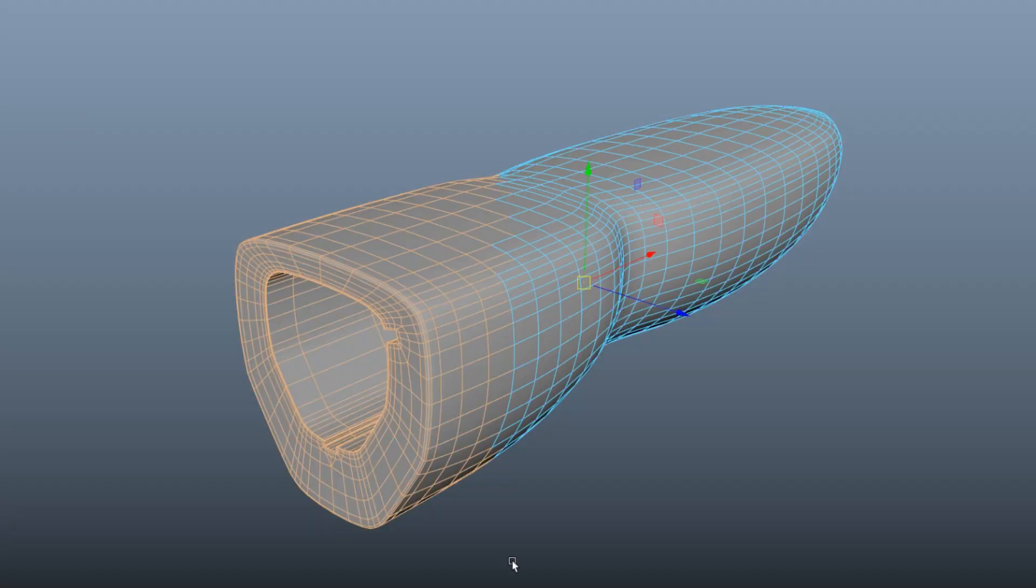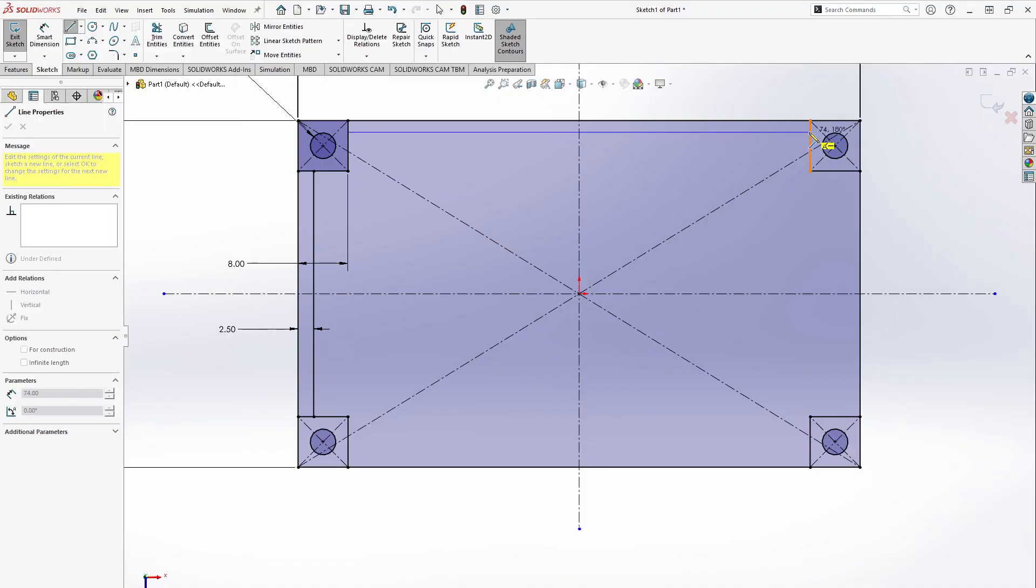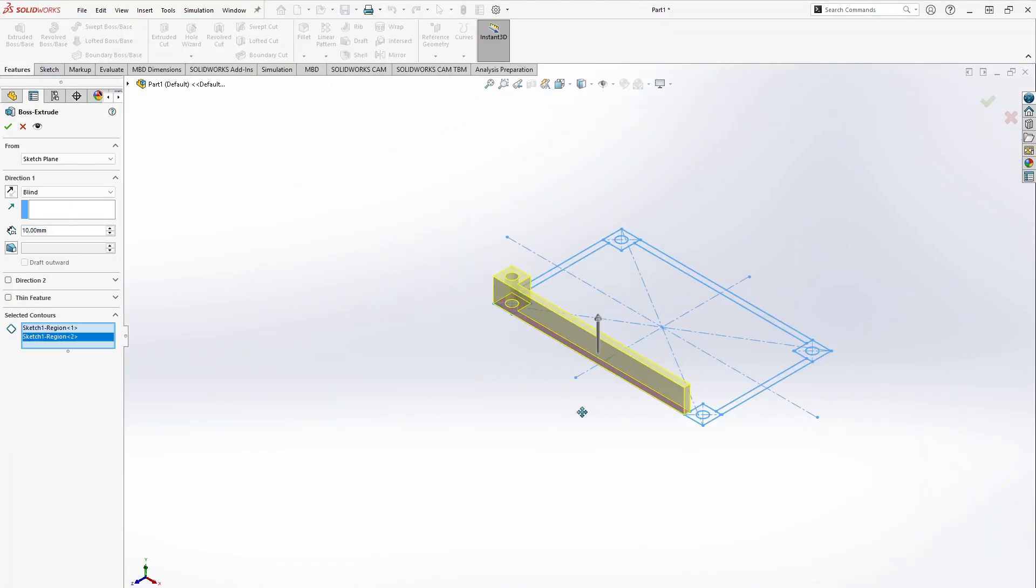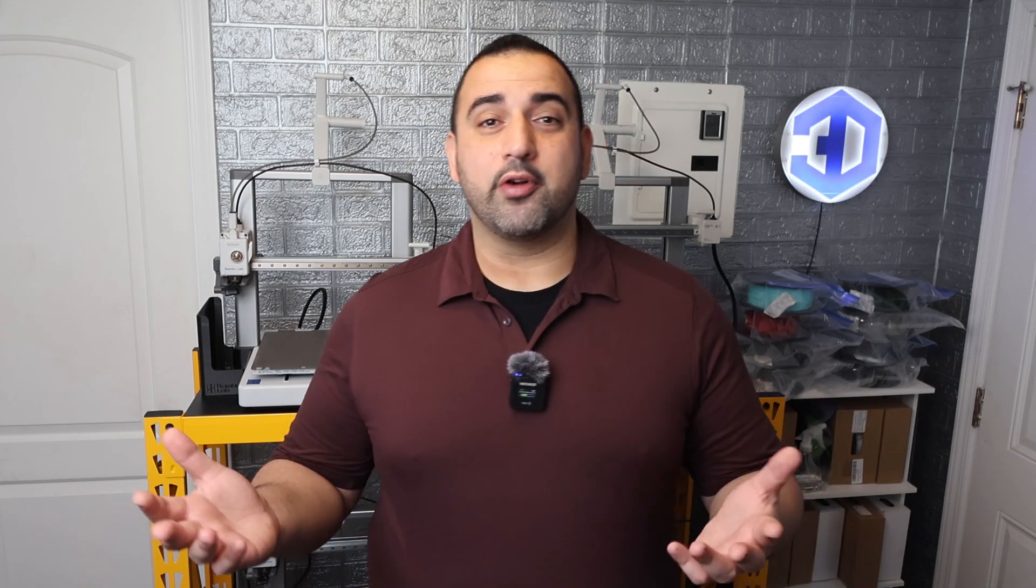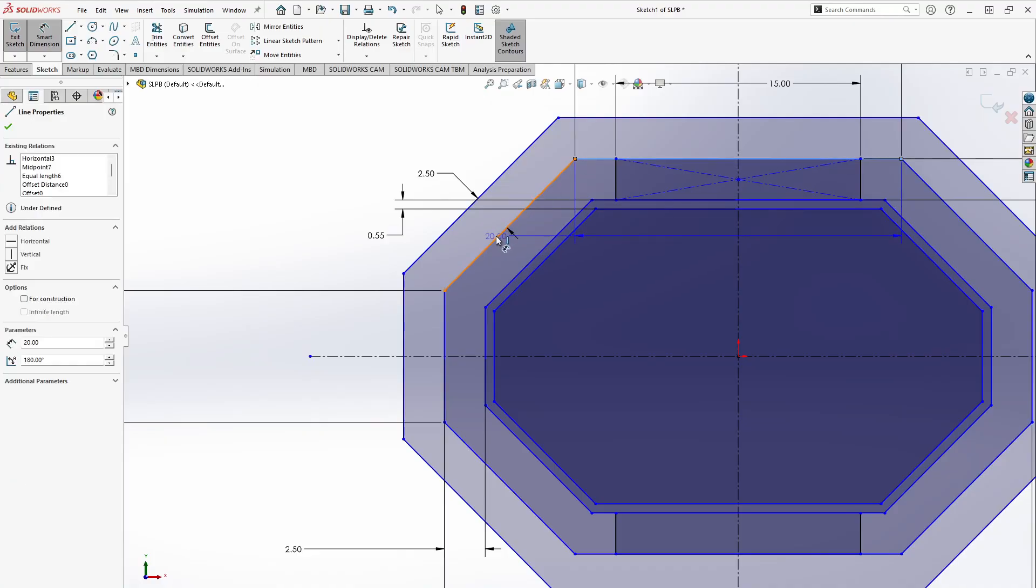The difference was night and day. Instead of 3D modeling with vertices, edges, and faces, SolidWorks starts with logical, geometry-based sketches that build into 3D models. Every line, every sketch relation, it all made sense. With this fresh perspective, I realized something painful but necessary. I had to scrap my original design and start over. So over the course of a few nights, I redesigned everything from scratch. This time, in SolidWorks.